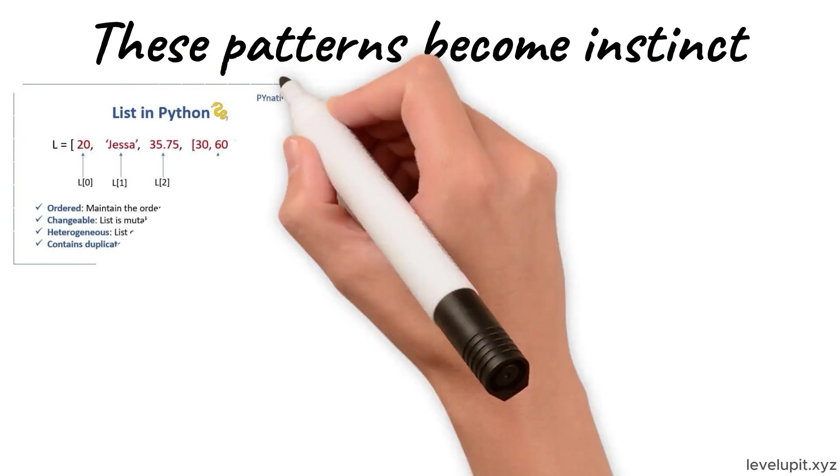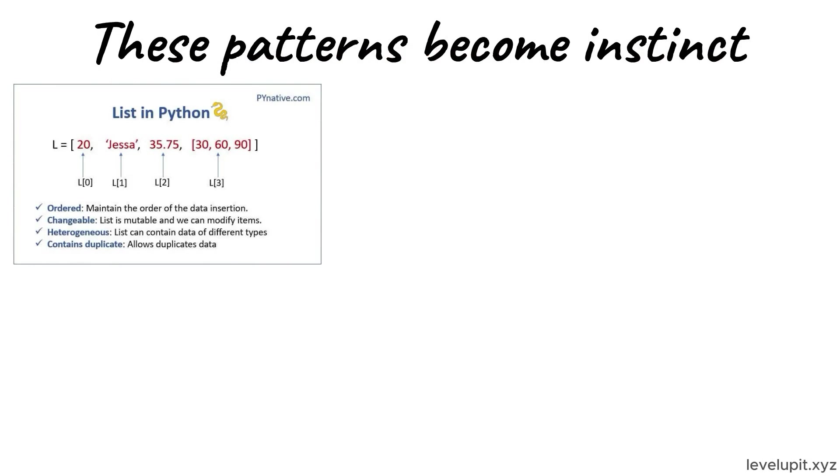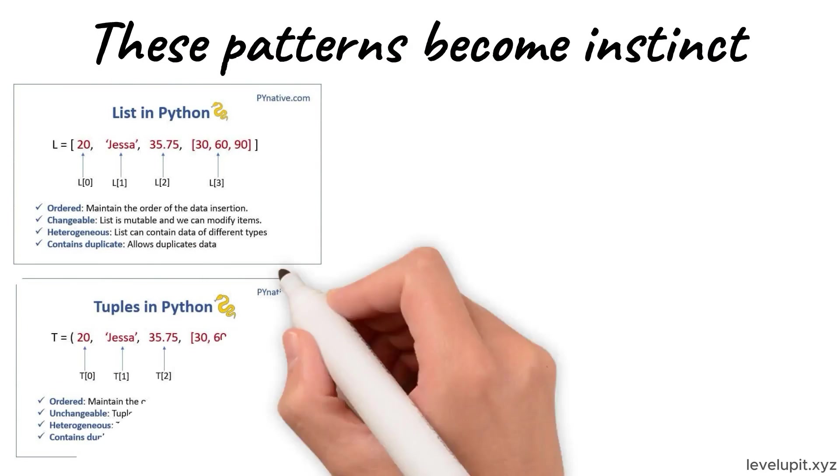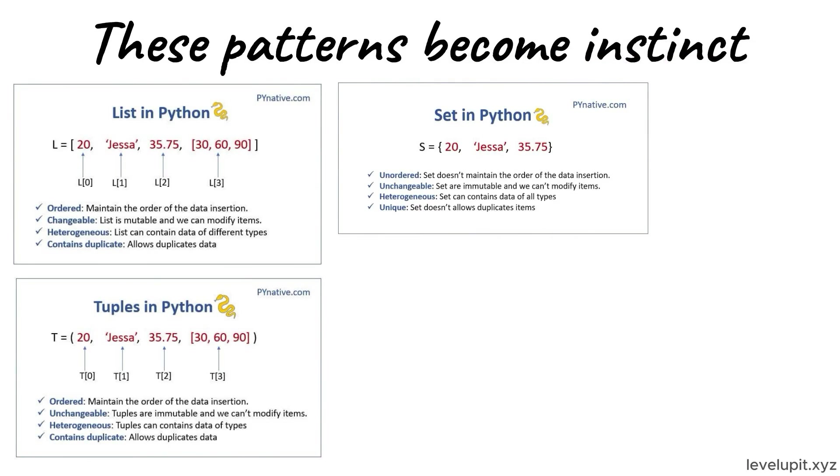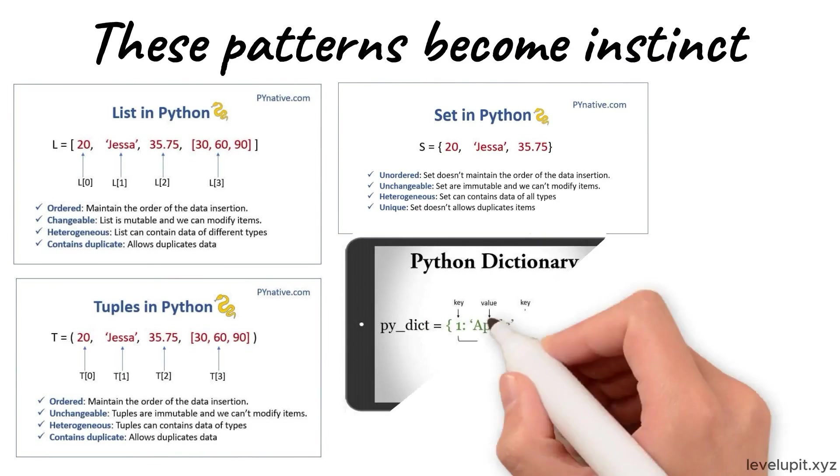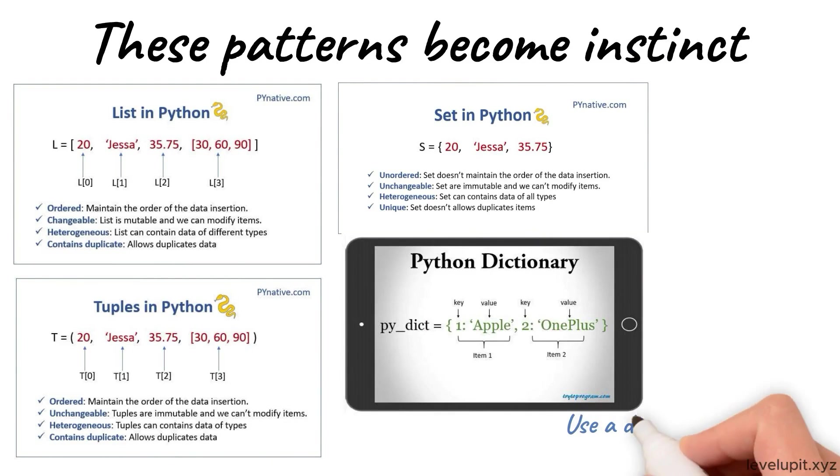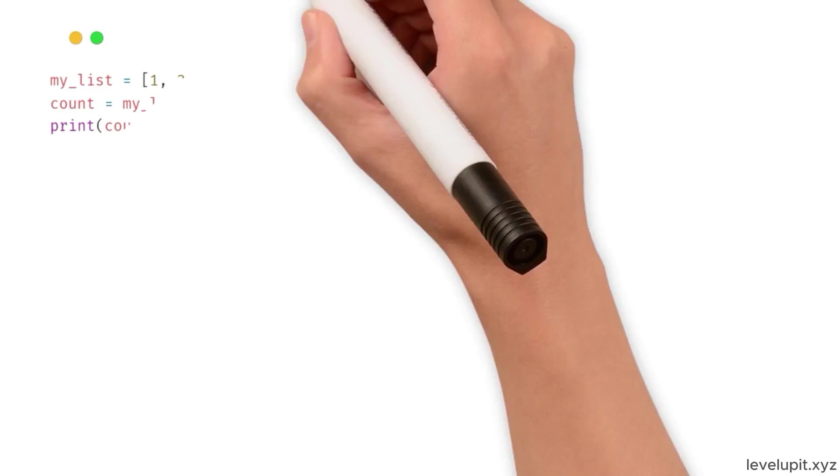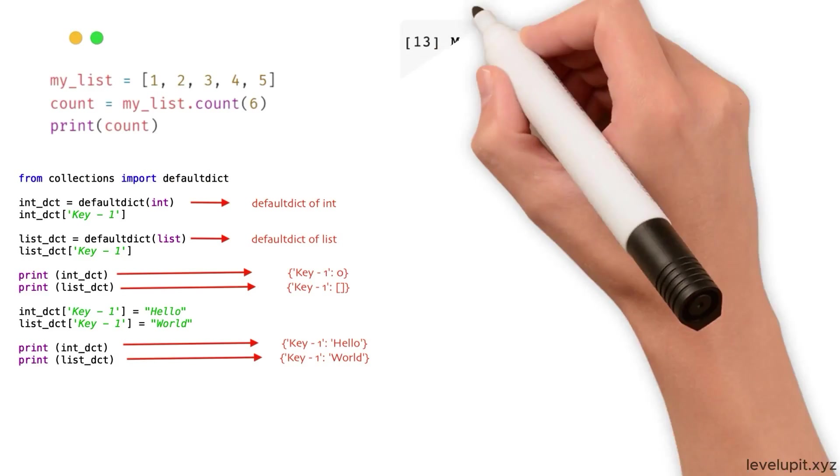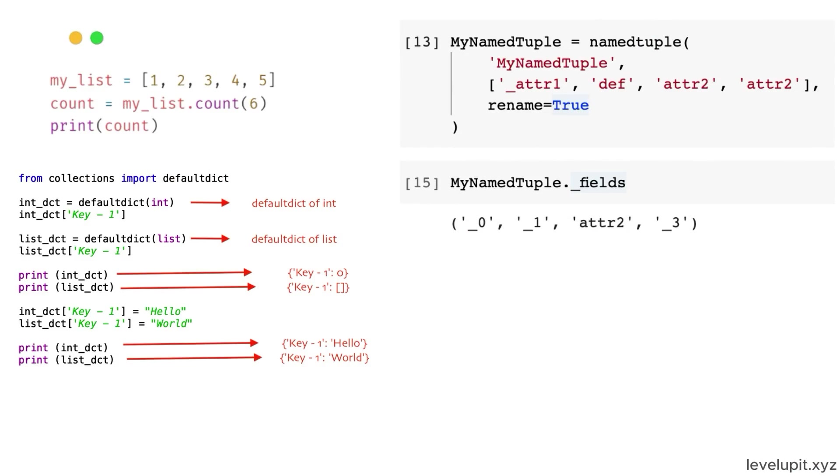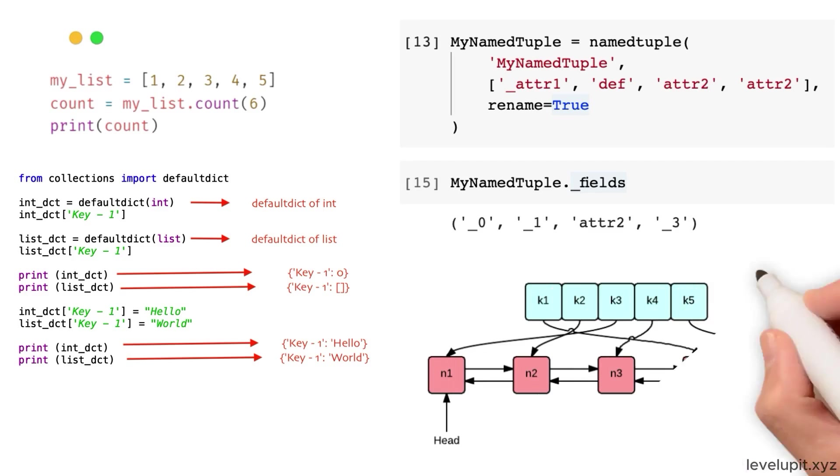Use a list for ordered collections that change and grow. Use a tuple for small groups of values that should stay the same. Use a set when you need uniqueness and fast membership checks. Use a dictionary to map names to values with quick lookups. Use a deque when both ends of a sequence matter. Use Counter to count easily. Use defaultdict to remove setup code. Use namedtuple to read values by name without heavy classes.